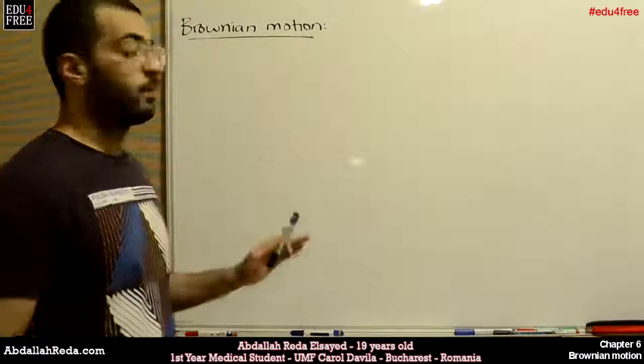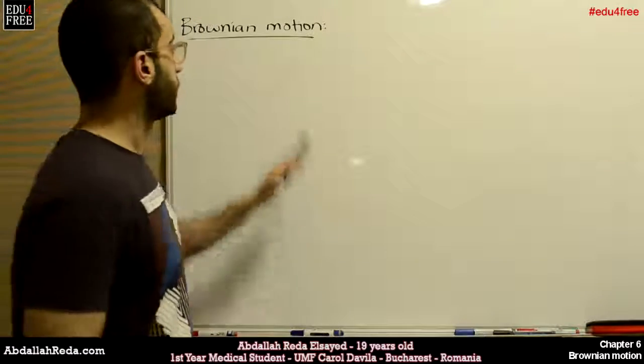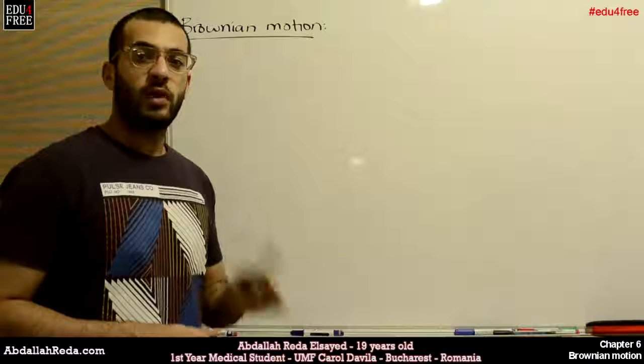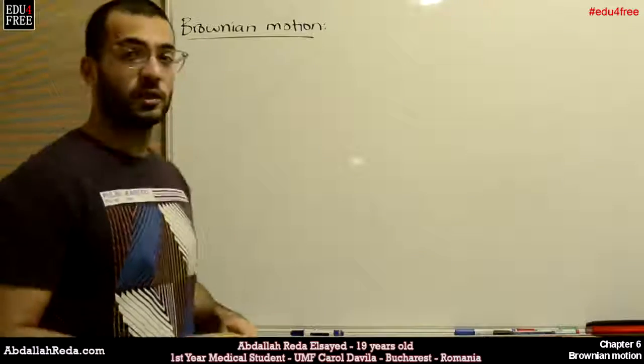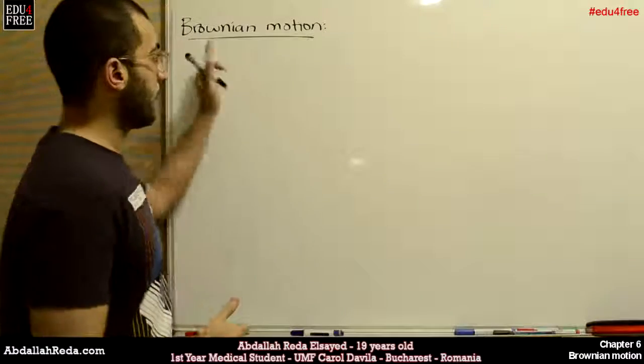Today we are going to talk about a very important concept in physics which is called Brownian motion. The Brownian motion was discovered by an English botanist whose family name was Brown, obviously.